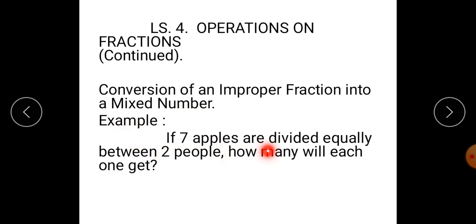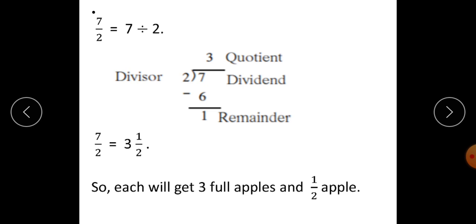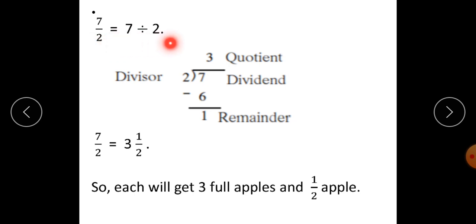If 7 apples are divided equally between 2 people, how many will each one get? You have to divide 7 apples between 2 people equally. Therefore, 7 upon 2, which also means 7 divided by 2 — so we have to divide 7 by 2.